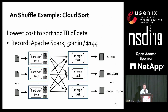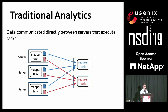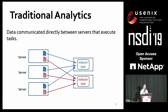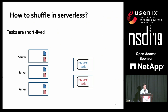For traditional systems like Spark, shuffle data is directly communicated across the servers executing tasks. Spark can do this because it runs long-running agents on each server — even after tasks from a previous stage finish, later tasks can still read the intermediate data. But in a serverless setting, all tasks are short-lived and we have no control over the servers, so we cannot deploy long-running agents. When tasks finish, all data and containers are recycled by the platform, and tasks from later stages cannot read the data anymore. So direct server communication is a no-go on serverless.